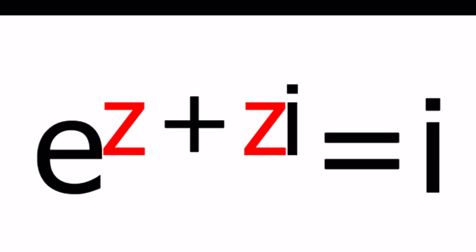While z is a complex number and we have e to the power z plus zi and that is equal to i and we're going to be solving for z values. All right let's see how we can proceed with this.